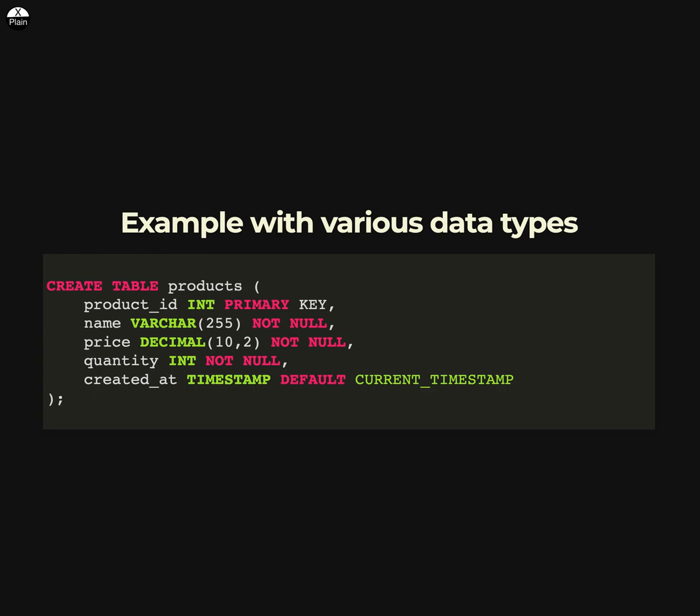The product ID column is the primary key and cannot contain null values. The name and price columns also cannot contain null values. The created_at column is a timestamp with the default value of the current timestamp.